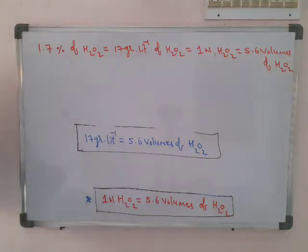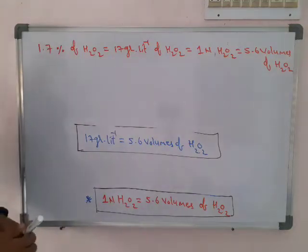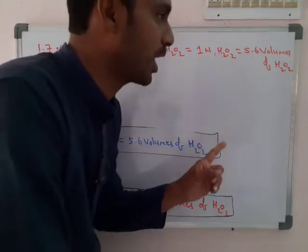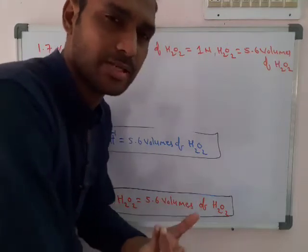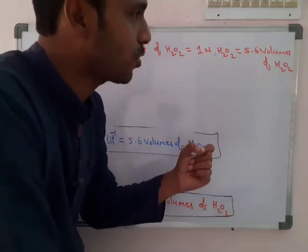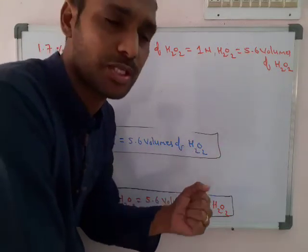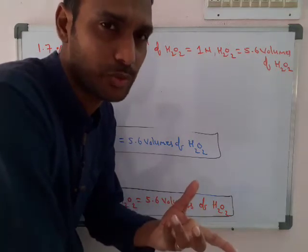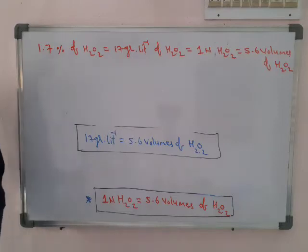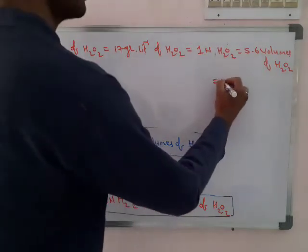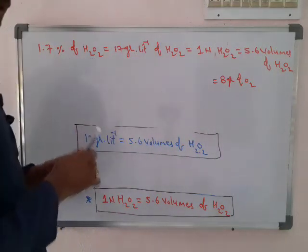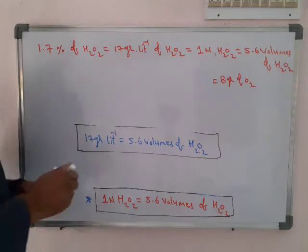Remember: 5.6 volumes means 5.6 liters of oxygen. Also, 22.4 liters of oxygen is 32 grams; so for 5.6 volumes, we get 8 grams of oxygen. That is also equal to 8 grams of oxygen. This total relation is applicable only at STP.